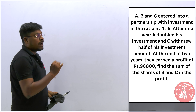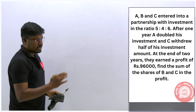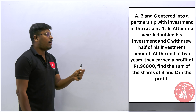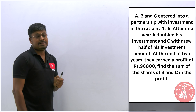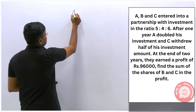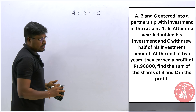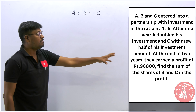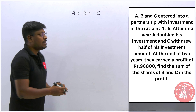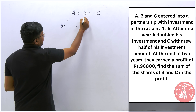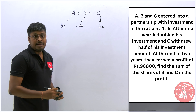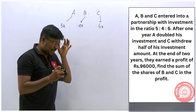Third question: A, B, C entered into a partnership with an investment ratio of 5:4:6. After one year, A doubles the investment and C withdraws half the investment. At the end of two years the profit earned was 96,000. Find the share of B and C. There are three persons starting a business together with investment ratios: A = 5x, B = 4x, C = 6x.